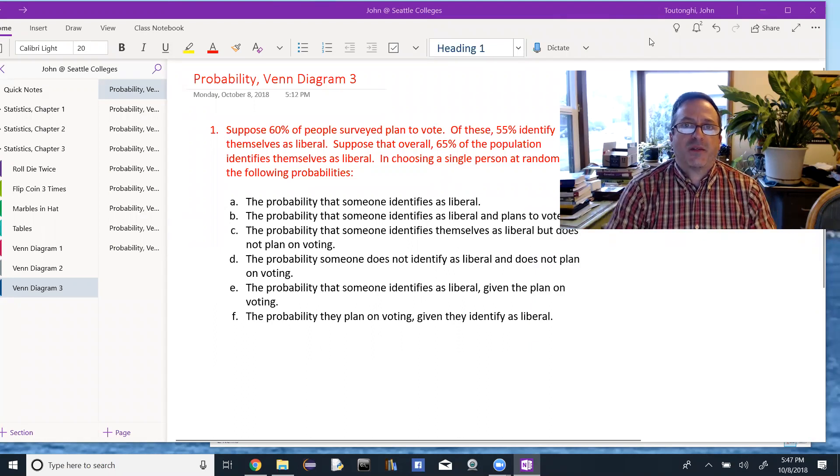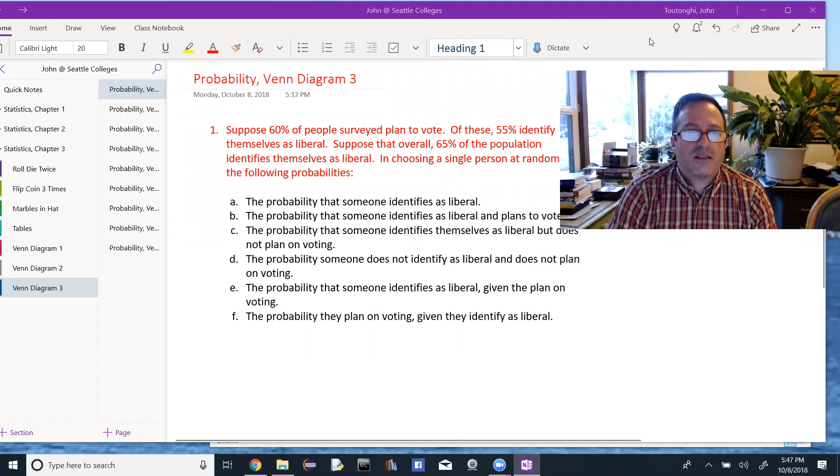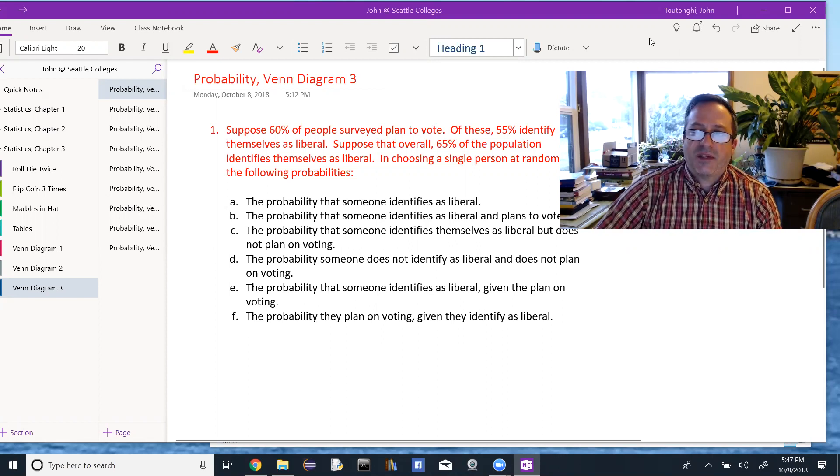This one is slightly different because we're not given the intersection of people who plan to vote and the people who identify themselves as liberal. So we're going to have to figure that out as we begin to complete our Venn diagram.